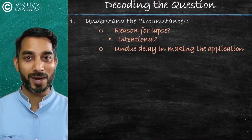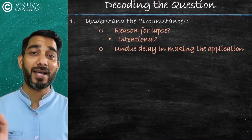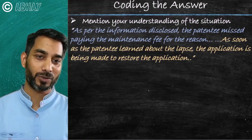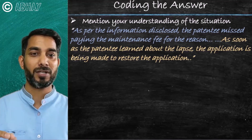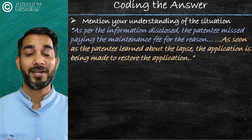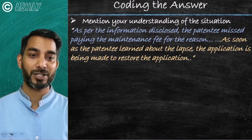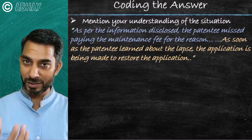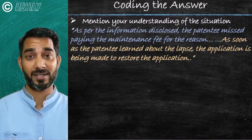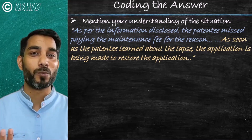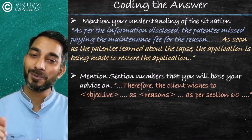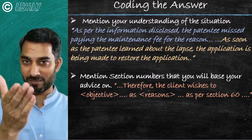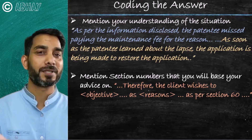How do we attempt to answer it? We start our usual way by mentioning our understanding: as per the information disclosed, the patentee missed paying the maintenance/renewal fee, and as soon as the patentee learned about the lapse, the application is being made to restore the patent. So we are justifying the fact that it was unintentional and there is no undue delay in making this application for restoration. Therefore, the client wishes to restore the application as the reasons were unintentional with no undue delay, as per Section 60.